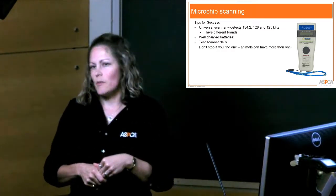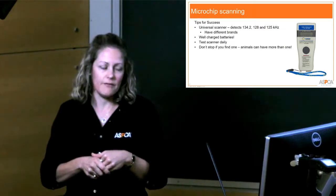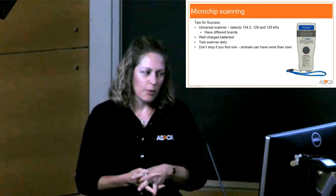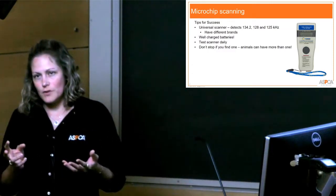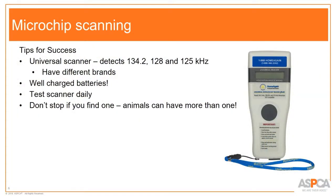We know nothing is perfect, but there are ways to improve the efficacy of that scanning. First, hopefully you all have universal scanners — if not, you definitely need one. There are three different frequencies of microchips, so you need to be able to pick up any of them. Ideally, have a different brand of scanner at intake versus in the clinic area to increase the chances of finding a chip.